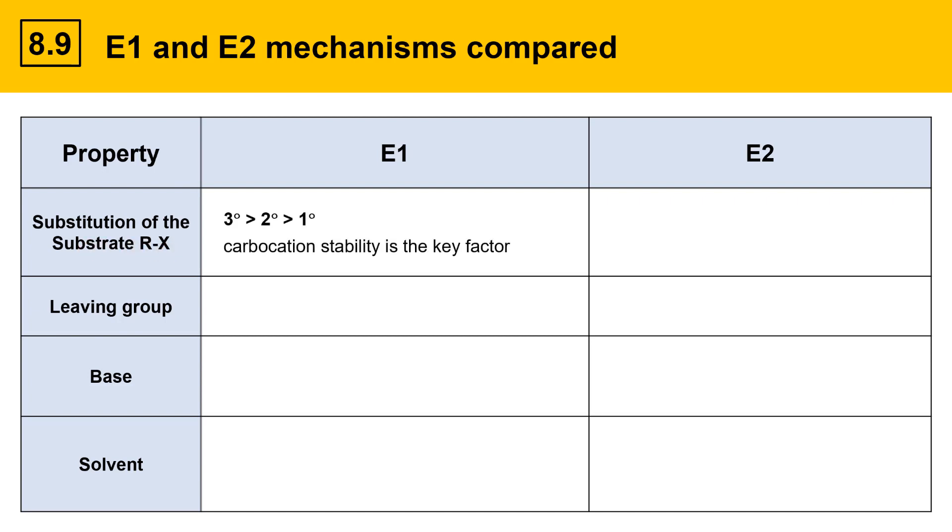For the E1 mechanism, more highly substituted alkyl halides react fastest. Tertiary is faster than secondary, which is faster than primary. And the reason for this is that carbocation stability is the key factor. The rate-determining step for E1 is the first step, which involves the formation of the carbocation. So stability of the carbocation plays a key role.